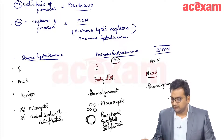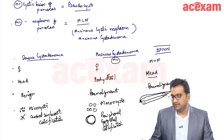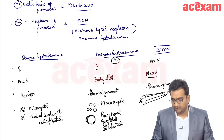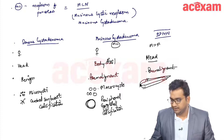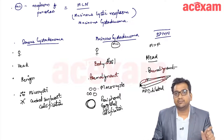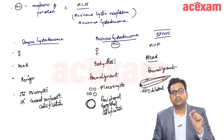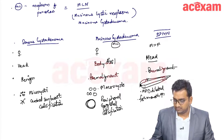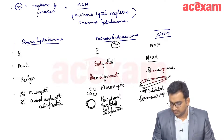In IPMN there is either a main branch lesion involving the main pancreatic duct leading to pancreatic duct dilatation, or a side branch lesion leading to side branch duct dilatation. There will be recurrent acute pancreatitis. On ERCP there will be a dilated patulous opening of the papilla — a fish mouth-like appearance — and there will be protrusion of mucin through that opening.